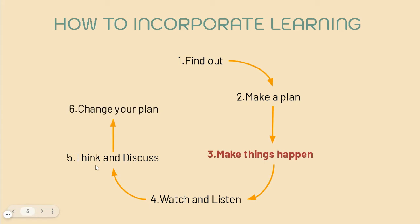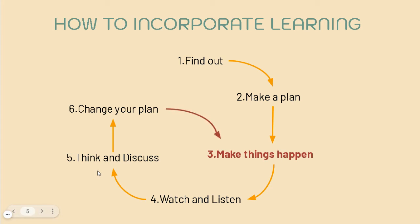Step six is changing your plan. If it happens that as you think and discuss, you find recommendations that you can make about improving your program, cutting costs, or creating a better experience for your beneficiaries, this is where you change your plan. You take those recommendations and adjust your project design. This is essentially the most important step when talking about learning. You have found something out along the way and now you get to incorporate the changes necessary for improvement, and we close our circle by making things happen all over again.